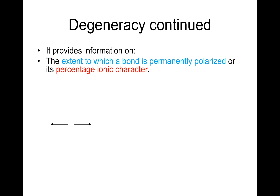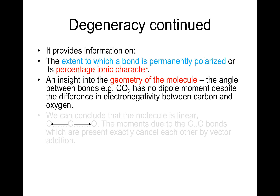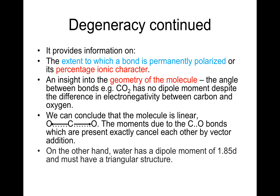The Stark effect provides information on the extent to which a bond is permanently polarized, or its percentage ionic character, and insight into the geometric structure of the molecule such as the angle between bonds. For example, carbon dioxide has no dipole moment despite the difference in electronegativity between carbon and oxygen, so we can conclude the molecule is linear — the moments due to the C-O bonds cancel each other by vector addition. On the other hand, water has a dipole moment of 1.85 Debye and must therefore have a triangular structure.